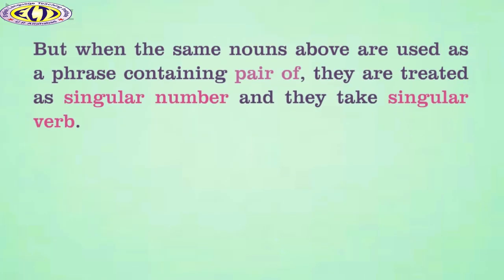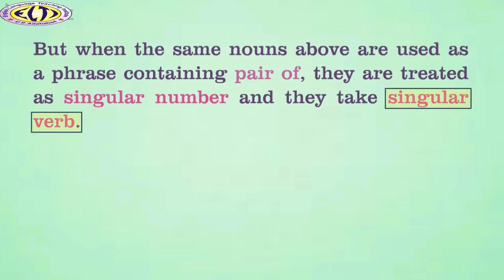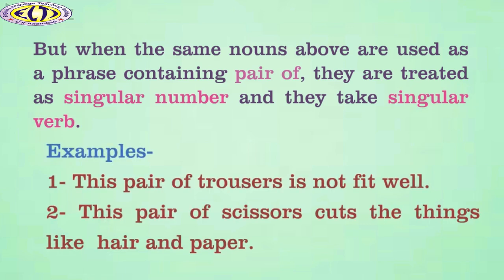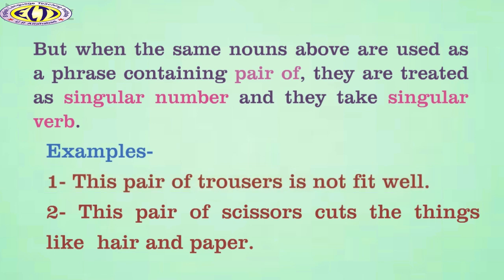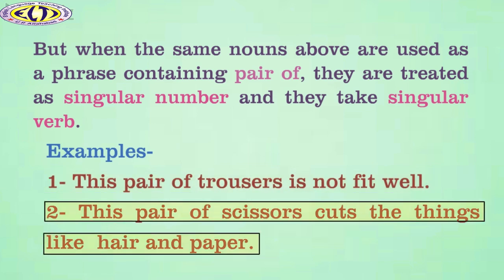But when the same nouns above are used as a phrase containing 'pair of', they are treated as singular number and they take singular verb. For example, this pair of trousers is not fit well. This pair of scissors cuts the things like hair and paper.